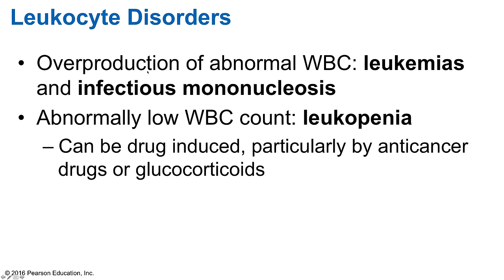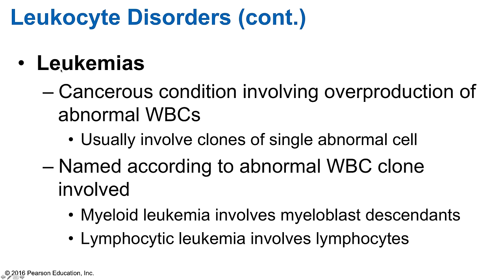There could be overproduction of abnormal white blood cells — the two conditions we'll look at are leukemias and infectious mononucleosis. There can also be an abnormally low white blood cell count, termed leukopenia — 'leuk' means white and 'penia' means deficient, so not enough white cells. Similarly, erythropenia refers to low red blood cell count. Leukopenia could result from certain drugs such as anti-cancer drugs or steroids like glucocorticoids, which suppress the formation of white blood cells.